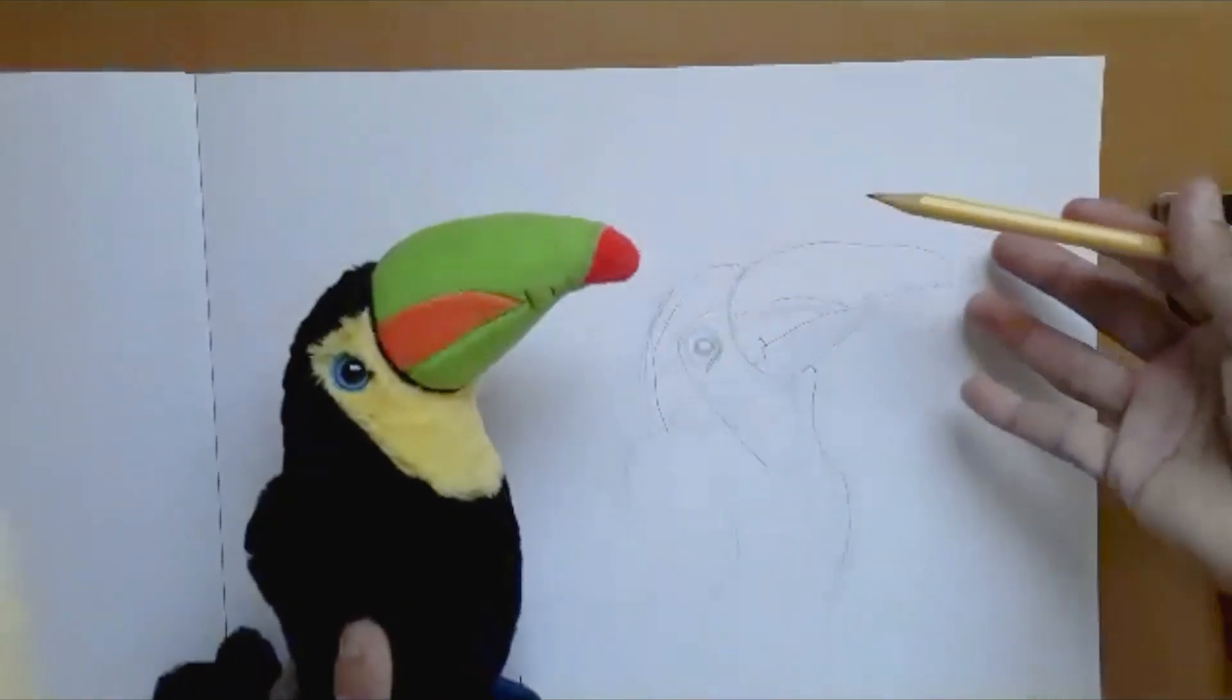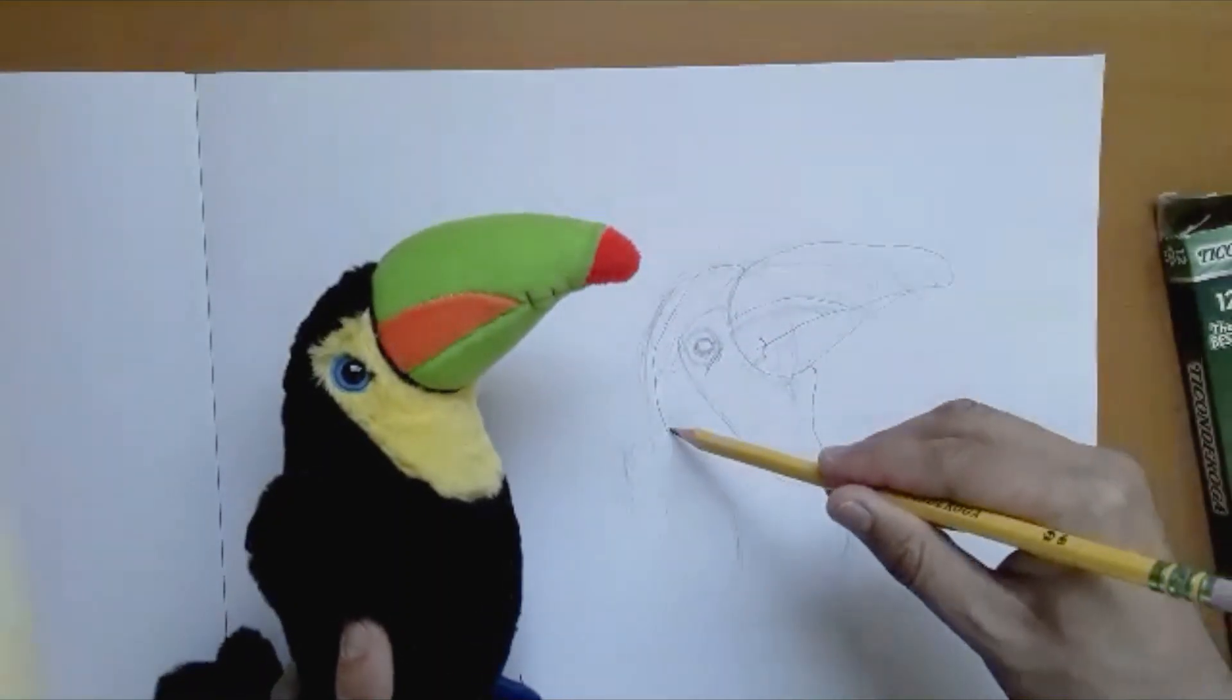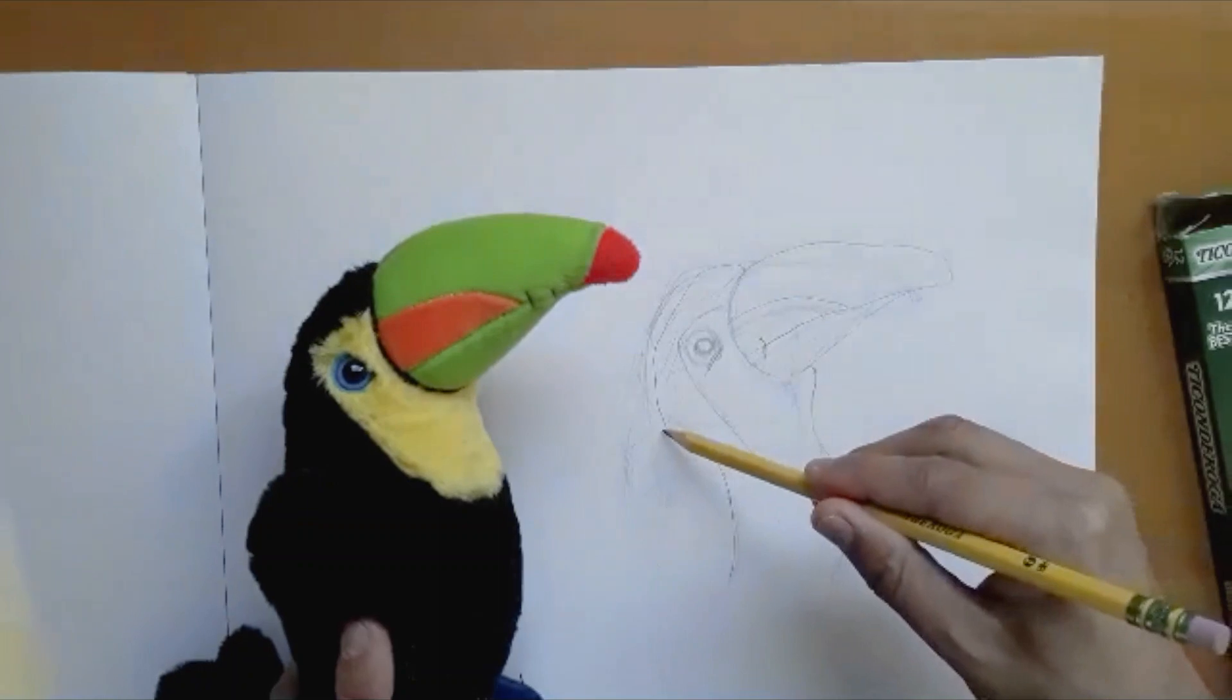You can always continue your drawing and add certain features like the swing on the toucan. For example, if you're drawing a flower, you can add more petals.